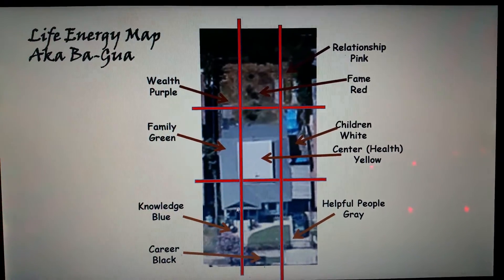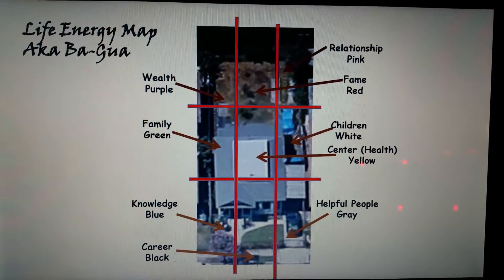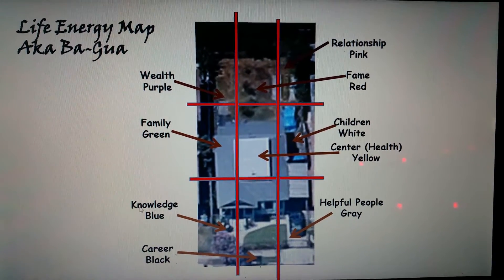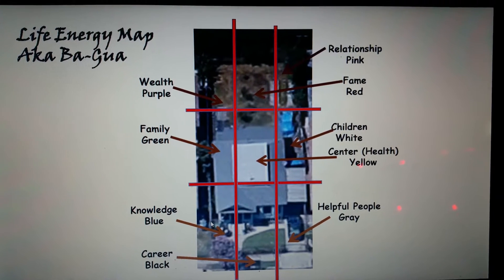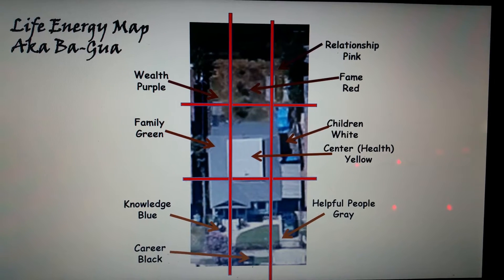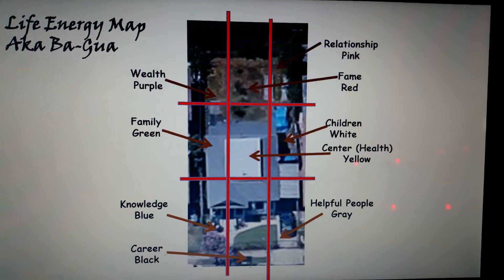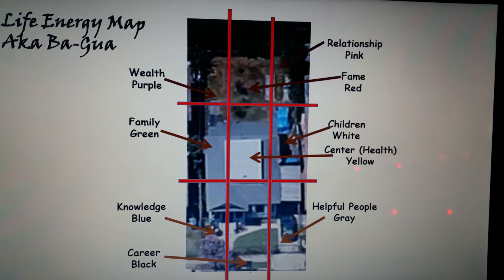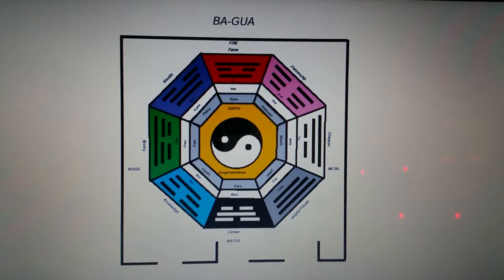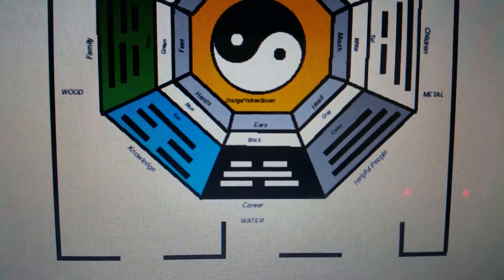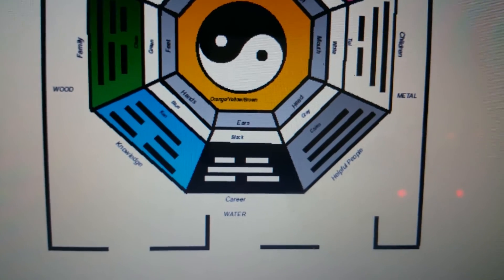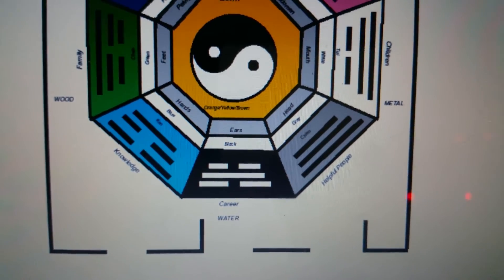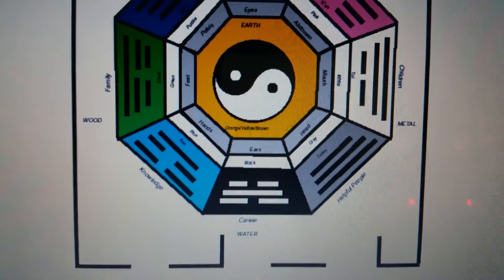If you divide your property into nine equal parts, in the front of the property you'll find the Knowledge area on the front left side, the Career area in the center front, and the Helpful People area in the right-hand front part of the property. Looking at the Bagua, you can see that same relationship here — at the bottom of the page there are openings, and your property can open either in Helpful People, Career, or Knowledge.